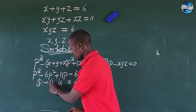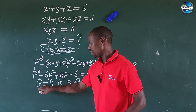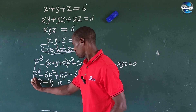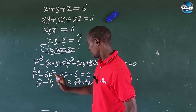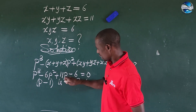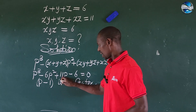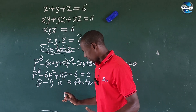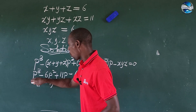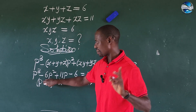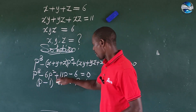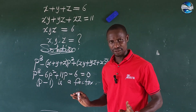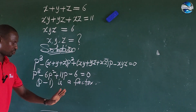Let's verify that. If P equals 1, we get 1 minus 6, which is minus 5; minus 5 plus 11 gives plus 6; plus 6 minus 6 gives 0. So it is confirmed that P minus 1 is a factor.